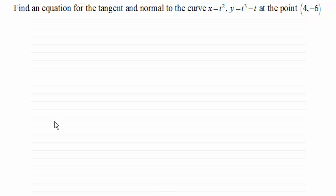To demonstrate this I've got this example where we've got the parametric curve x equals t squared, y equals t cubed minus t, and we've got to find the tangent and normal at the point (4, -6).